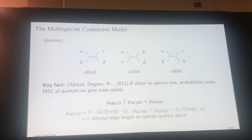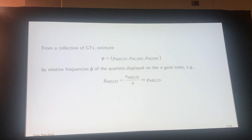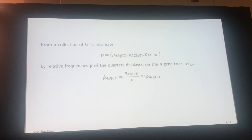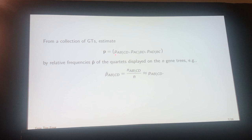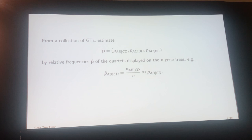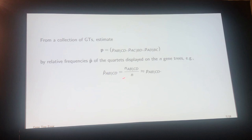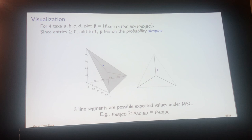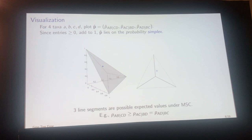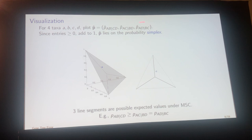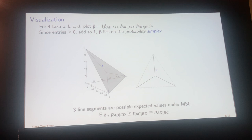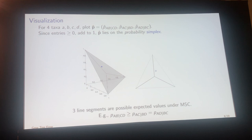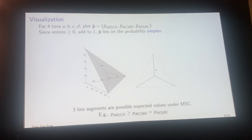From a collection of gene trees, assuming it came from the multispecies coalescent, I can estimate the three probabilities of the gene tree quartets just by looking at relative frequencies within my collection. I go through and count how many gene trees display each particular quartet, divide by the total number of gene trees, and get three numbers. Those three numbers are all positive and they add to one, and I can produce a plot from them.